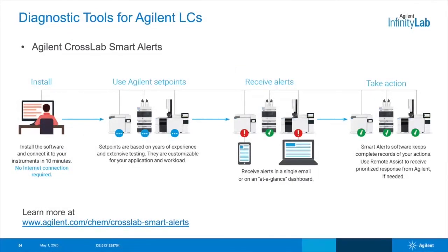Another piece of software that is available is Agilent CrossLab Smart Alerts. Once you install Smart Alerts and connect it to your instruments, the software compares your instrument use data against application-based insights from Agilent. This data is customizable for your application and workload. You can then receive alerts in a single email or in a dashboard when recommended limits are reached.